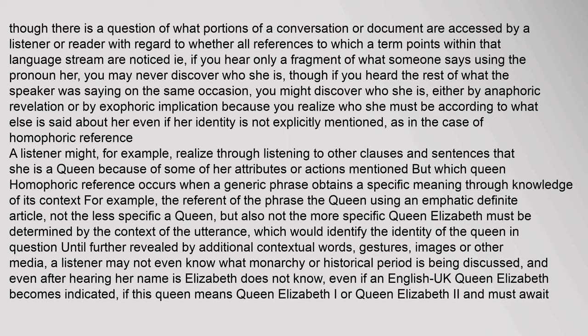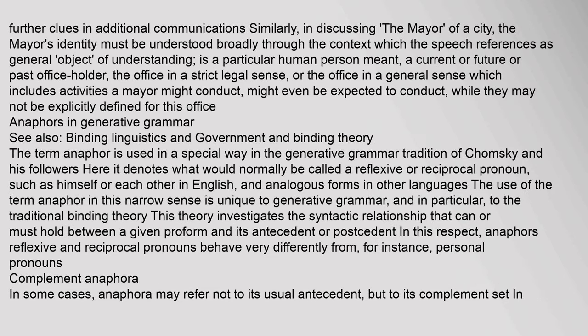Until further revealed by additional contextual words, gestures, images or other media, a listener may not even know what monarchy or historical period is being discussed. Even after hearing the name 'Elizabeth,' one does not know — even if an English UK Queen Elizabeth becomes indicated — if this queen means Queen Elizabeth I or Queen Elizabeth II, and must await further clues. Similarly, in discussing the mayor of a city, the mayor's identity must be understood broadly through context: is a particular human person meant, a current or future or past office holder, the office in a strict legal sense, or the office in a general sense which includes activities a mayor might conduct?